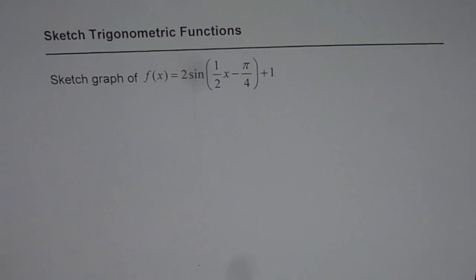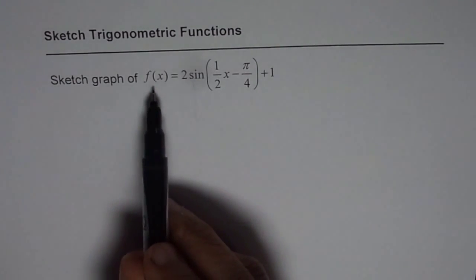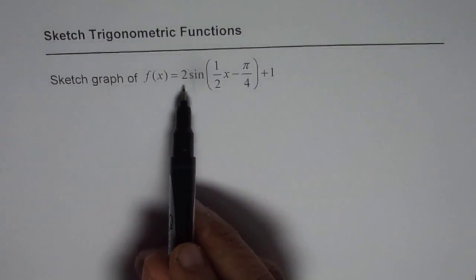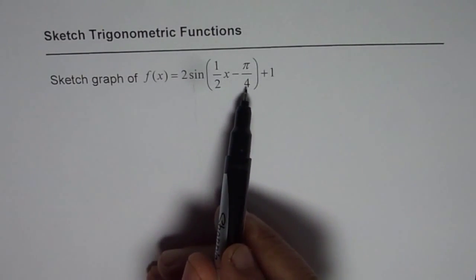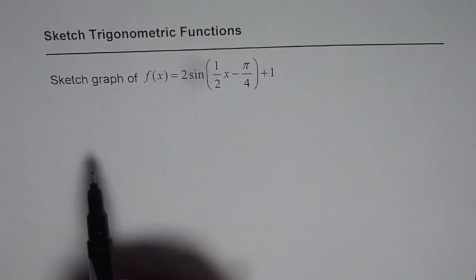I'm Anil Kumar and in this video we will learn how to sketch the graph of a transformed trigonometric function. The function given to us is f of x equals 2 times sine of half x minus pi by 4 plus 1.